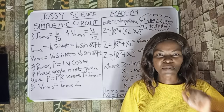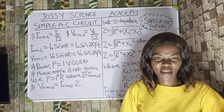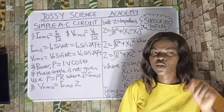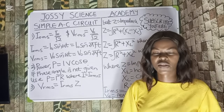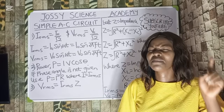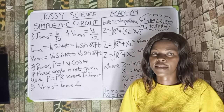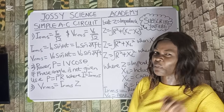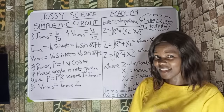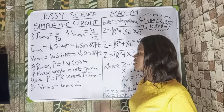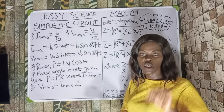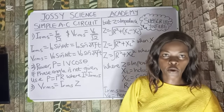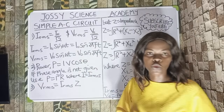Simple AC circuits is an extremely important topic — JAMB has brought out a question from this topic every single year from 1980 till date. Get your pen and paper. The first formula is the root mean square current: I_RMS equals I₀ over root 2, where I₀ is the peak current. Similarly, V_RMS equals V₀ over root 2. This formula relates root mean square values to peak values.